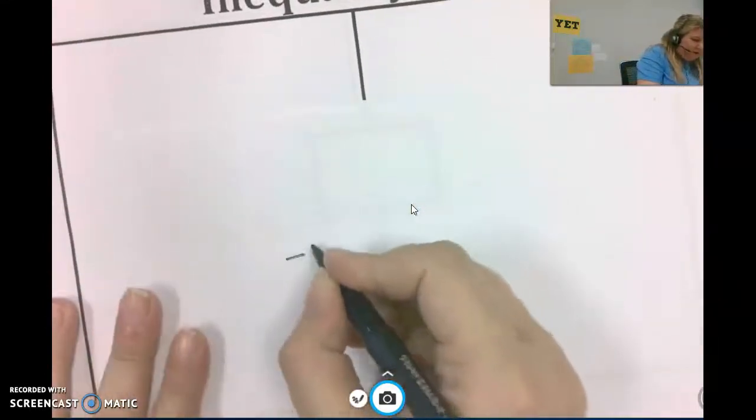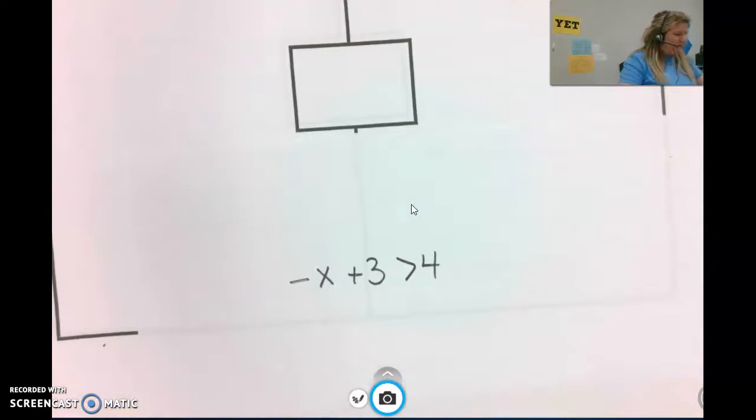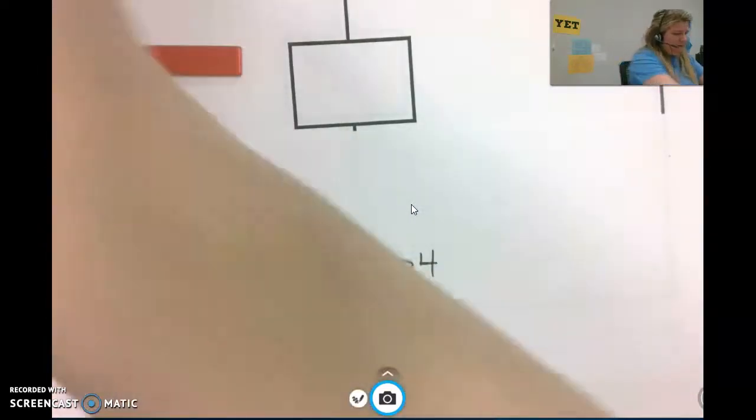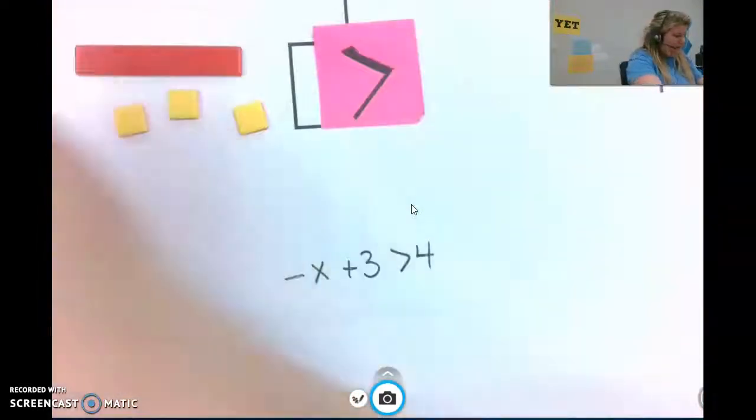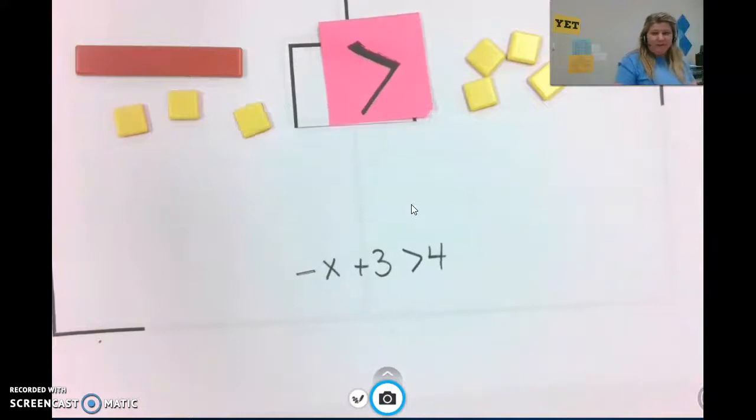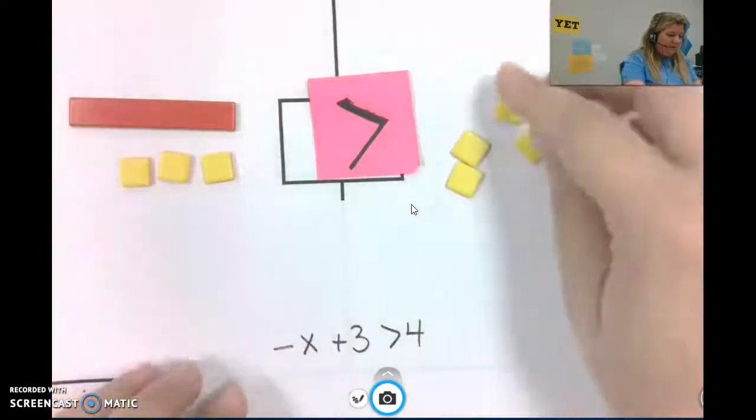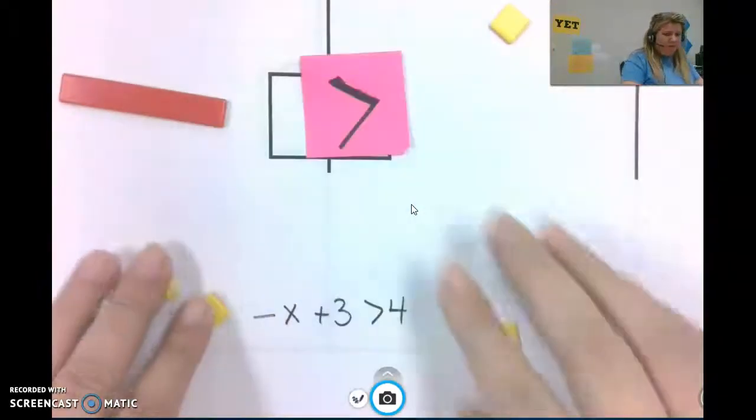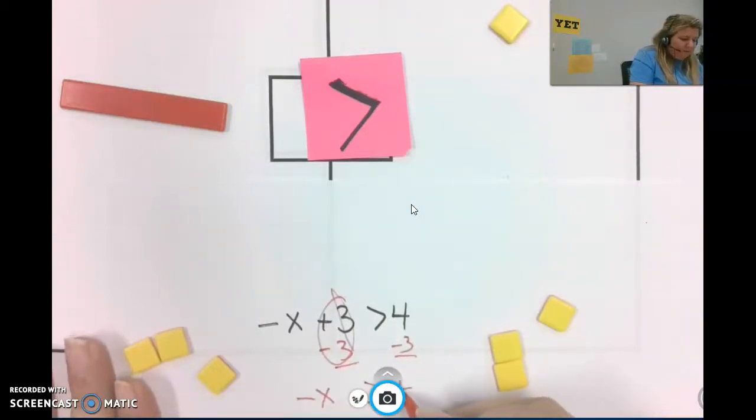Next problem. We've got two more to do. So we've got the opposite of x plus 3 greater than 4. So let's start with the opposite of x and 3. Greater than 4. So it goes down. Okay. So I have it set up. The first thing I need to do is remove this constant of 3 from each side. Okay. So I've done that. Subtracted 3 from each side. Leaving me with the opposite of x greater than 1.